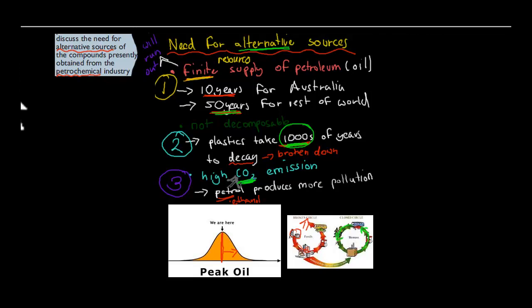Now we have another discuss: discuss the need for alternative sources of the compounds presently obtained from the petrochemical industry. So these are the reasons why we need to have different sources. First, we have a finite supply of petroleum. Finite means it will run out eventually. Our Australian reserves of petroleum will run out in 10 years. For the rest of the world, it will be roughly 50 years. Another reason is because petrochemicals made from petroleum take thousands of years to decay, which means we're going to have lots of plastic lying around. The third reason is that if you burn petrol for cars, that produces lots of carbon dioxide and more pollution.